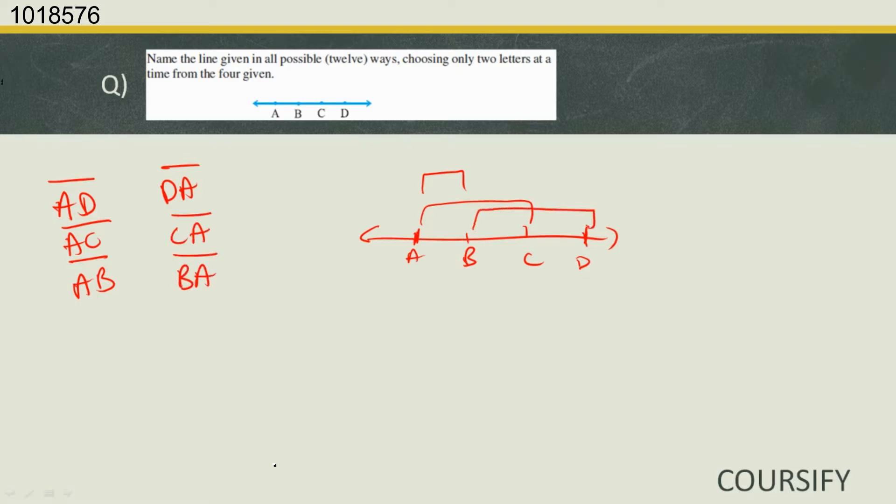Next we start from B and go all the way to there. So we have line BD. Then we take only this much, so we have line BC. Then you have the reverse, that is line DB and line CB.